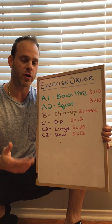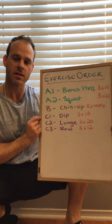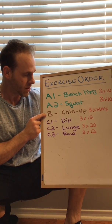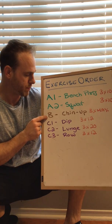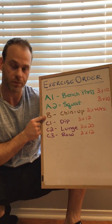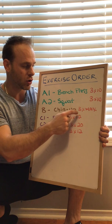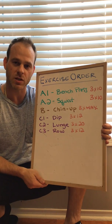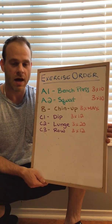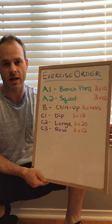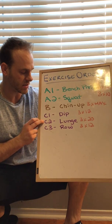Once you're finished your A series, then you move on to the next series, which is your B series. In this case, it's just one exercise on its own — it's just B alone. You'll see B is just the chin up. You're going to do three sets of as many reps as possible until it's completed. Then you'll go on to your next series.